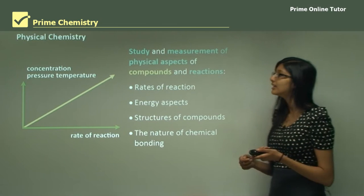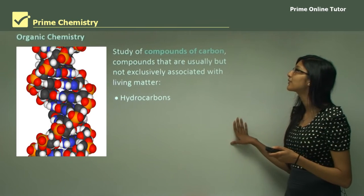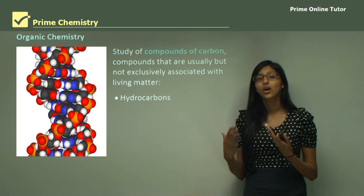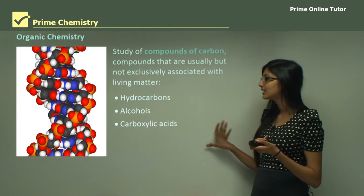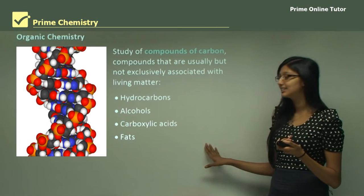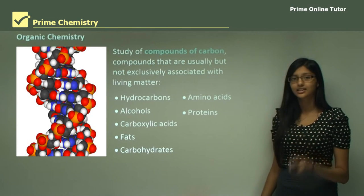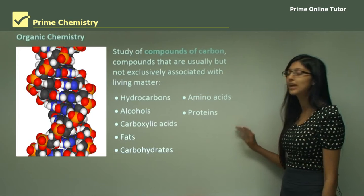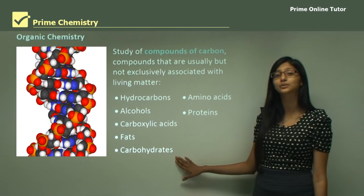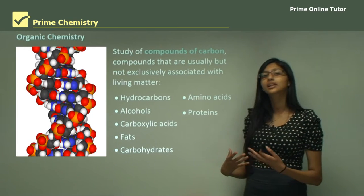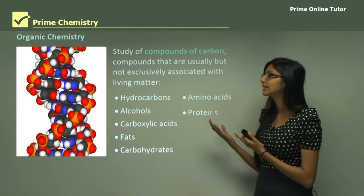Organic chemistry is the study of compounds of carbon, and is strongly associated with living matter such as hydrocarbons, alcohols, carboxylic acids, fats, carbohydrates, amino acids, and proteins. All these chemicals are strongly associated with the body — for example, carbohydrates provide us with energy and proteins help us to grow and develop. Therefore, organic chemistry is strongly related to living systems.